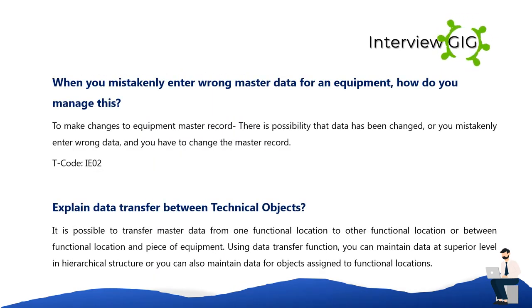To make changes to an equipment master record — whether data has changed or was entered incorrectly — use T-code IE02. It is possible to transfer master data from one functional location to another, or between a functional location and a piece of equipment. Using the data transfer function, you can maintain data at a superior level in a hierarchical structure or maintain data for objects assigned to functional locations.